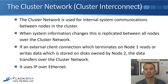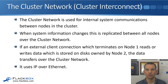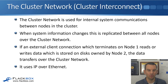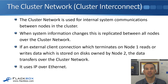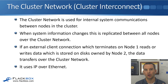First up, we have the cluster network, also known as the cluster interconnect. The cluster network is used for internal system communications between nodes in the cluster — it's for node-to-node internal traffic only. For example, when system information changes, it is replicated between all nodes over the cluster network. If you make an administrative change, that will be replicated to all nodes. Also, runtime information about operations occurring in the cluster will be replicated between nodes over the cluster interconnect.